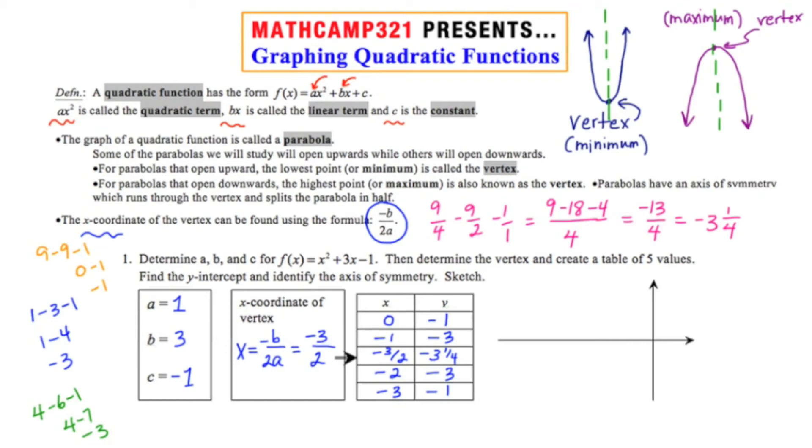So now I have five key points that I can graph to hopefully accurately sketch this parabola. And the point in the middle is the vertex, the all-important vertex. So now I'm going to set up my scale, and my x's range from negative 3 and a quarter to negative 1. So maybe I'll go down to negative 4.